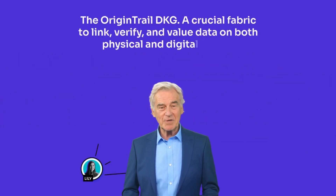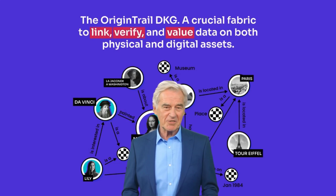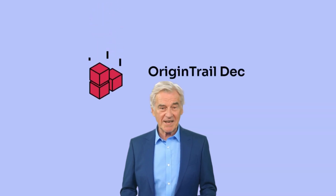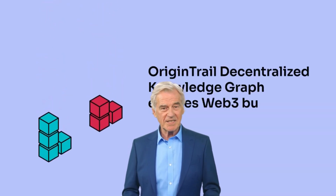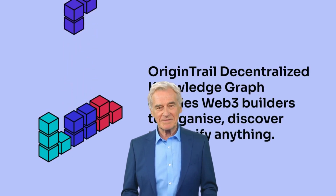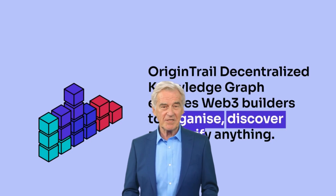This DKG builds on principles of neutrality, inclusiveness, and usability, and contributes to a more transparent, collaborative, and trusted economy. Harnessing the power of the decentralized knowledge graph, anything from supply chain data, consumer goods, or digital collectibles can be evolved into discoverable and verifiable Web3 assets, driving transparency and trust.